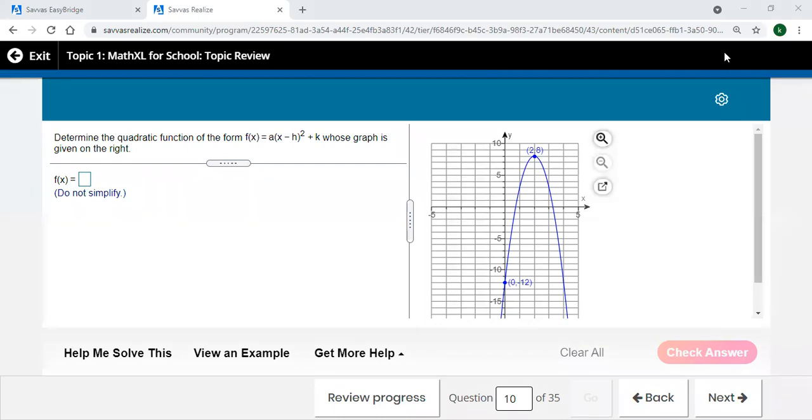All right everybody, Algebra 2 here, Topic 1 Review, and we're up to Problem 10. We are supposed to put the equation of this parabola at the right in this form, so let's talk about it.